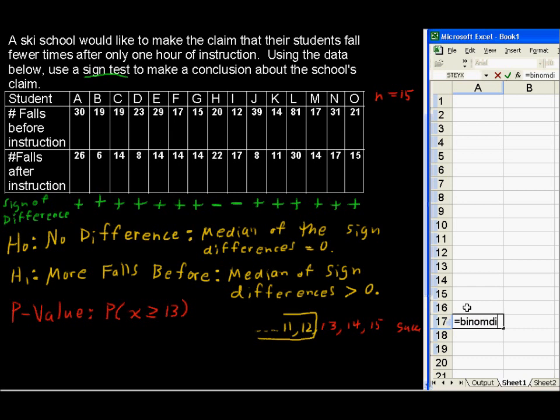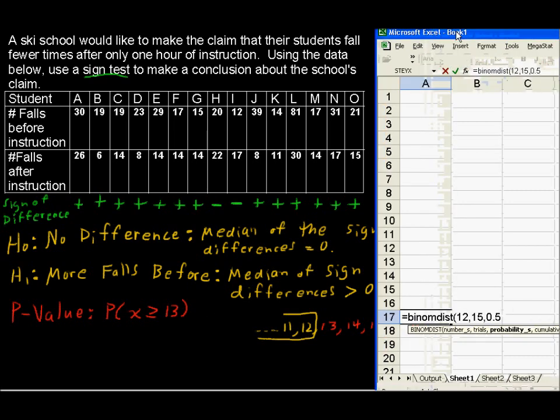Excel is pretty good about walking us through this. Number of successes, we want no more than, this is the way Excel works, it adds from the top number down. No more than 12 successes out of how many trials, 15 trials. Probability of success, this is like a coin flip, so we say 0.5. Is this cumulative? Excel is asking us, and we say true, we do want to add those up.